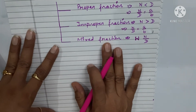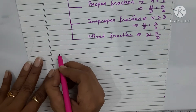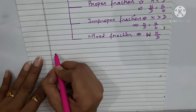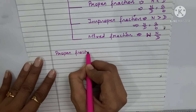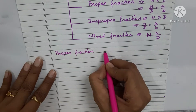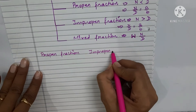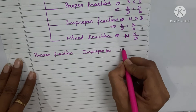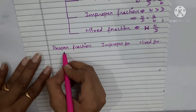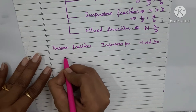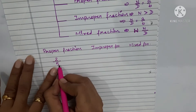Now let us see how to present each type on the number line. I'll write one example from each. For a proper fraction, for an improper fraction, and for a mixed fraction — we will work through all three.